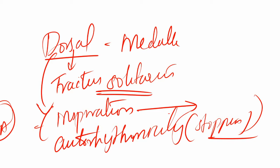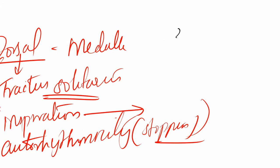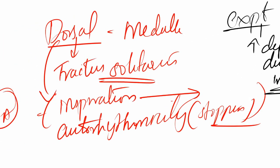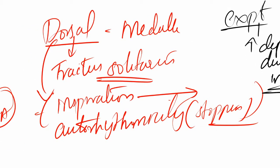We know the dorsal group is responsible for inspiration from experiments on animals — stimulating the dorsal group of neurons led to an increase in the depth and duration of inspiration. Stimulation did not increase expiration; it just kept on increasing inspiration. That confirms the dorsal nucleus is responsible for inspiration only.